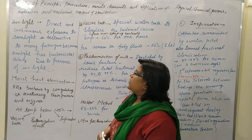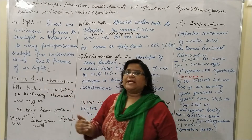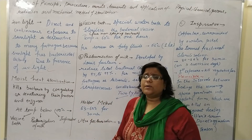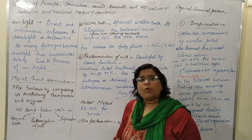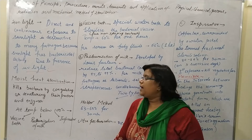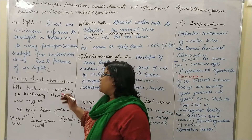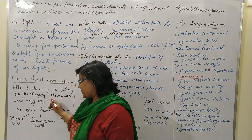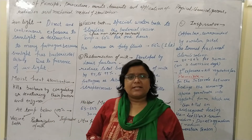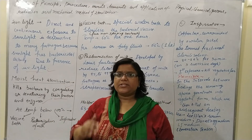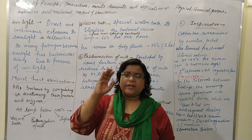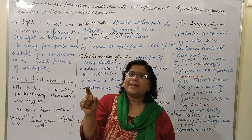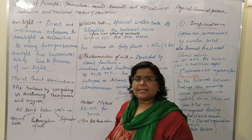Now we are going to discuss about moist heat sterilization. As the word says, it has some moisture or humidity, and the bacteria are killed by coagulating and denaturing their proteins and enzymes. Moist heat sterilization is in three phases: temperature below 100 degrees Celsius, temperature at 100 degrees Celsius, and temperature above 100 degrees Celsius.